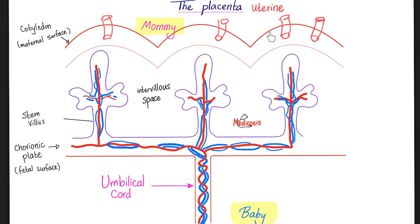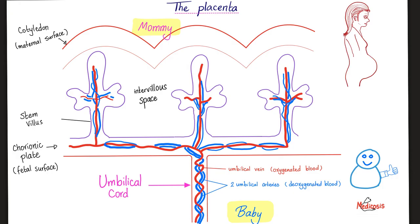Does mommy's blood touch the baby's blood? The answer is no — and that's the purpose of the placenta, to separate both of them. Oxygen goes from mommy to the baby by diffusion through a membrane, but the two bloods do not touch. Otherwise, some antigens from the baby would go to mommy's blood and mommy would start attacking the baby immunologically. The umbilical cord is mesoderm. The red is the umbilical vein — it carries oxygenated blood from the placenta to the baby's heart. The two blue lines are the two umbilical arteries, carrying deoxygenated blood from the baby's heart towards mommy.